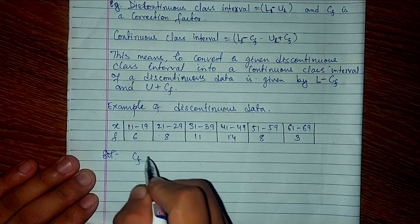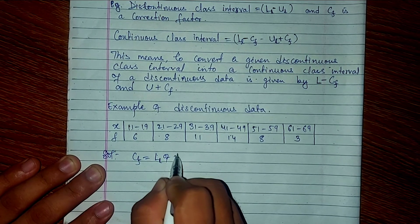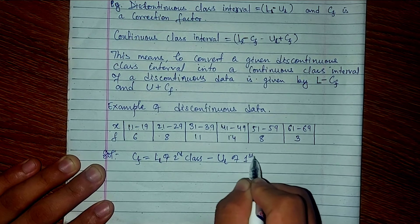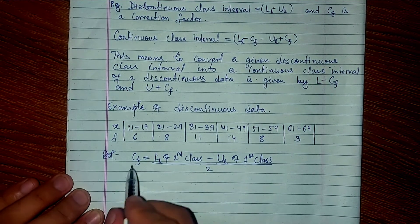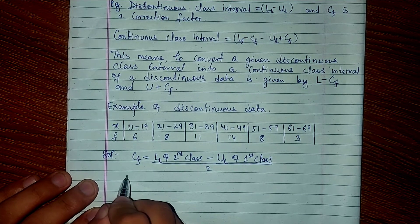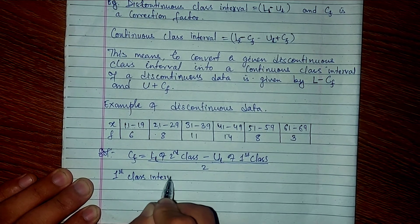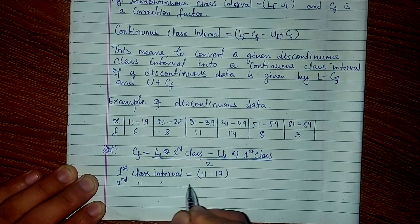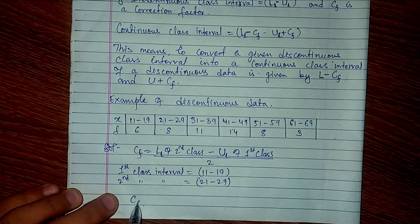Applying the formula: CF equals lower limit of second class minus upper limit of first class, divided by two. The first class interval is 11 to 19, and the second class interval is 21 to 29.